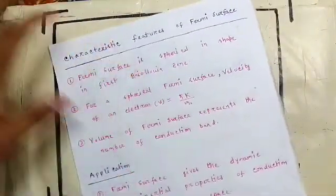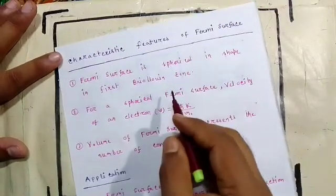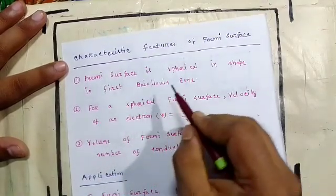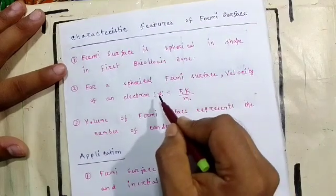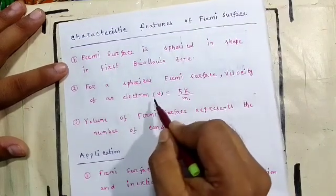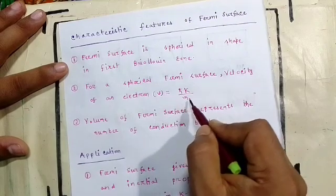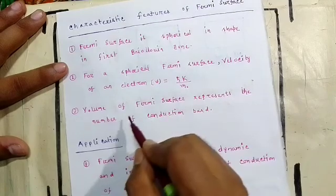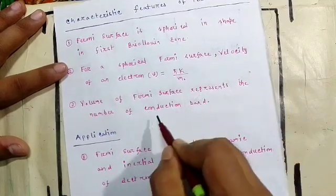So now I will discuss some characteristic features of Fermi surface. First characteristic feature is Fermi surface is spherical in shape in first Brillouin zone. Second characteristic feature is for a spherical Fermi surface, velocity of electron is h cross k by m. And third one is volume of Fermi surface represents the number of conduction band.